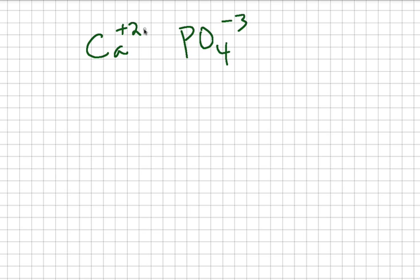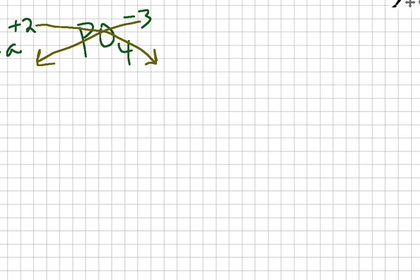You can cross these charges. The two would come to the bottom of the phosphate and the three will go to the bottom of the calcium. So we have Ca3(PO4)2 taken twice and that's the quick way to solve the formula for calcium phosphate.